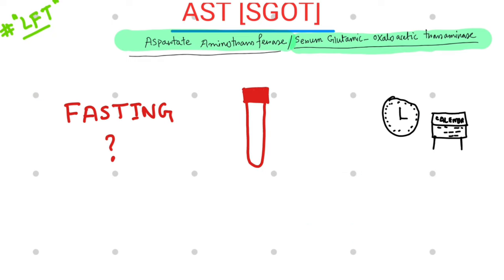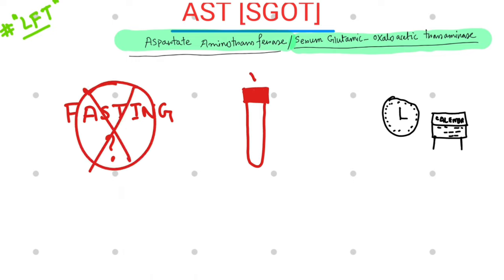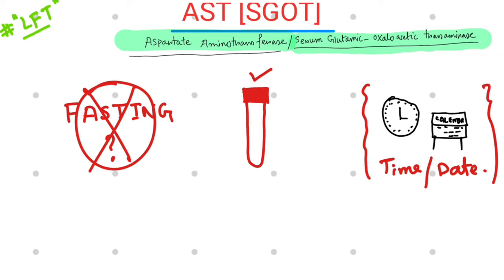Fasting is not required for this blood test. The blood tube used is red in colour. It is advisable to record the date and time of the test, as the enzyme level in the blood may change over time. For future correlation, the time and date record is very crucial.